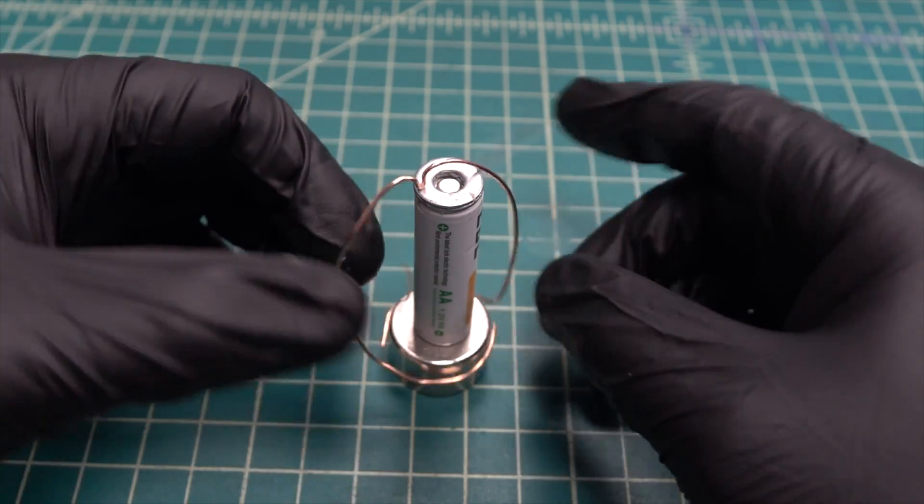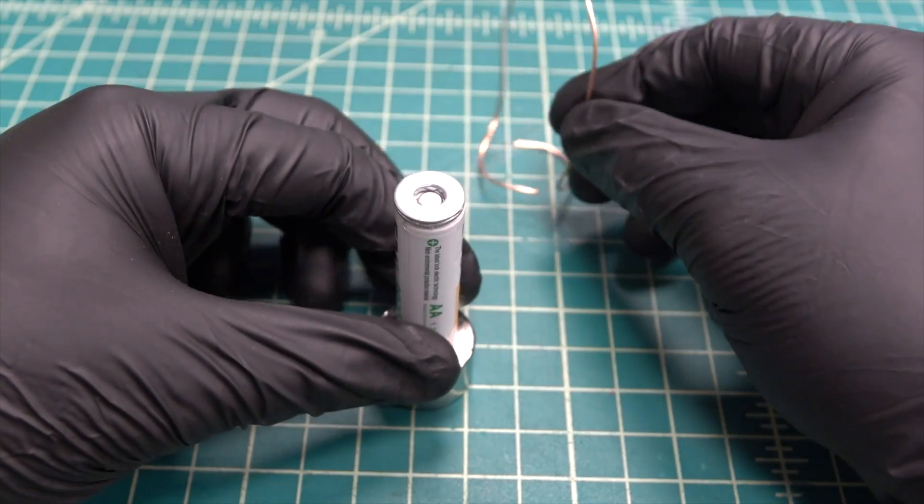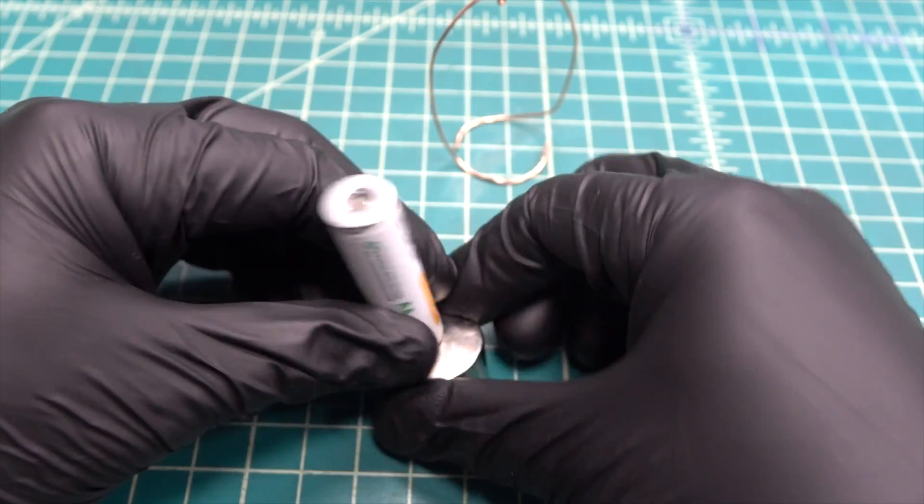We can also determine the direction of rotation with the right hand rule just like we did with the vortex. Flipping the magnet over reverses the direction of rotation.